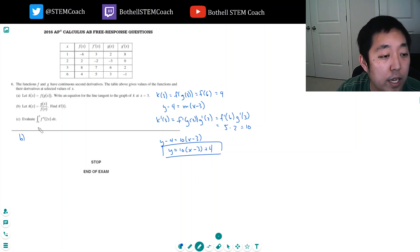Part b: let h of x equals g of x over x. Find h prime of 1. h prime of x is quotient rule: bottom times the derivative of the top minus top times derivative of the bottom, over the bottom function squared.